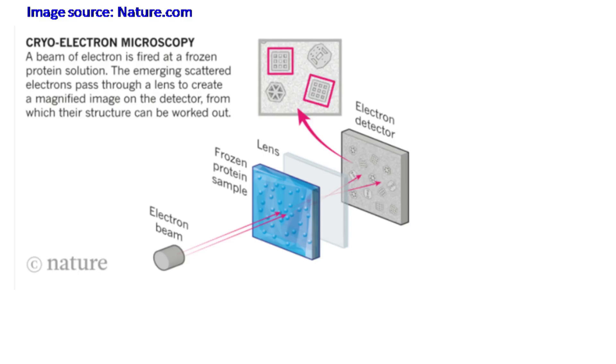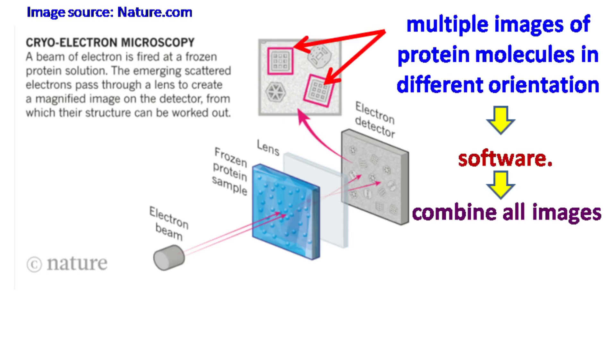In this method, a beam of electrons is fired at a frozen protein solution. As the electrons get scattered and diffracted, they pass through electromagnetic lenses, which creates magnified image on the detector. An interesting thing to note is that the frozen protein solution can have protein molecules in different orientation. Hence, while taking multiple images of protein molecules in different orientation, a 3D image of protein can be obtained by combining all images using a software.